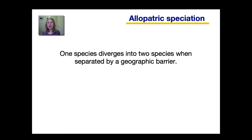We will first take a closer look at allopatric speciation. Just to repeat so you remember: allopatric speciation is when one species diverges into two species when they are separated by a geographic barrier.